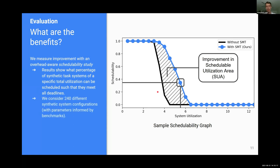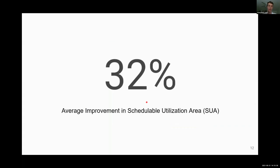We can't show all of our results as there were over 240 different configurations and parameterizations considered, many informed by benchmarks. But the average improvement in schedulable utilization area overall is 32%. This is very impressive as our original question was how do we get more capacity out of multi-core — if you use SMT, we found you can schedule 32% more utilization than before. That's equivalent to, in a four-core system, adding more than one additional core.